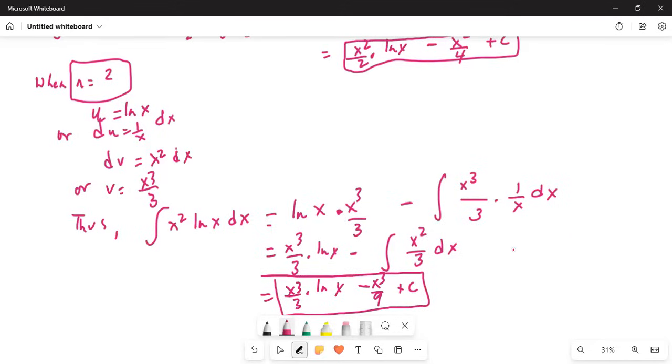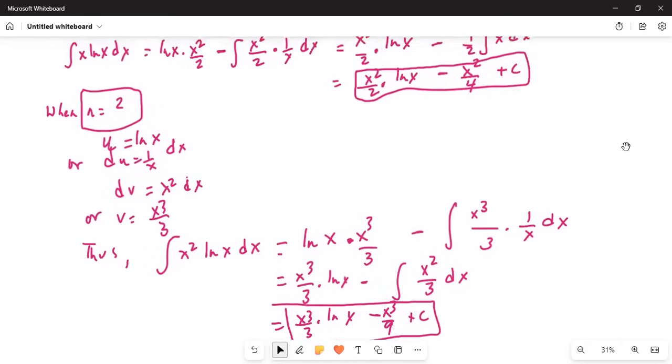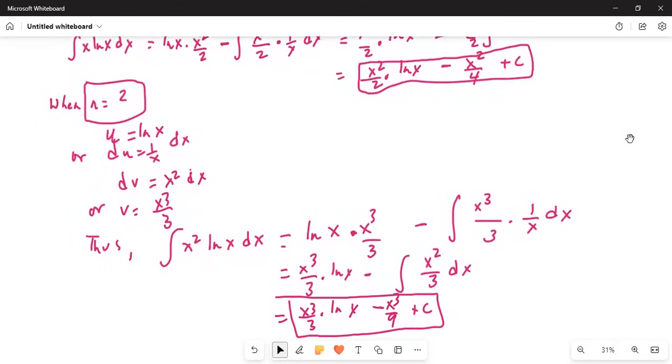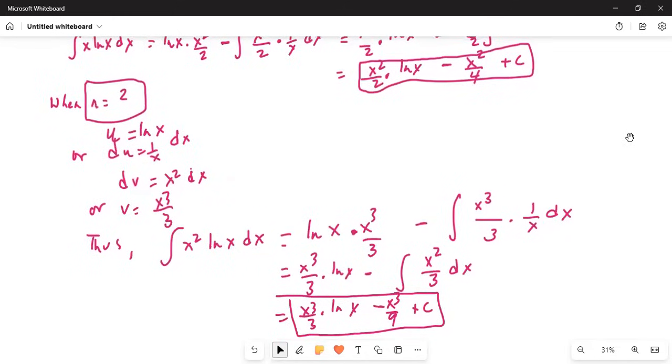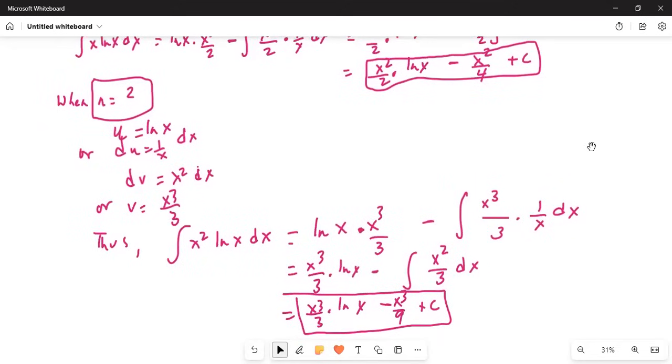So, look at the similarity between n equal to 1 and n equal to 2. In n equal to 1, you have x squared divided by 2 times ln x as the first term. In n equal to 2, you have x cubed by 3 times ln x. Next term, when n equal to 1 is minus x squared by 4. When n equal to 2, it is minus x cubed by 9. And c is of course the integration constant. So, there is a general pattern going on here. The pattern I will write for you is, let me move this a little bit up.